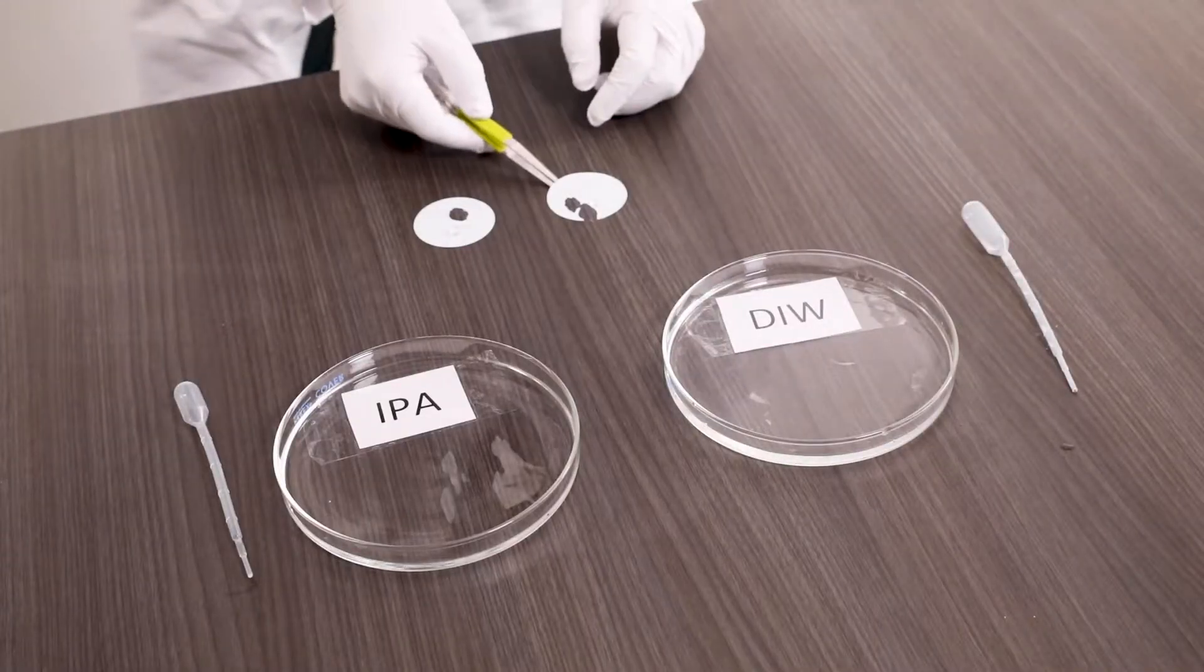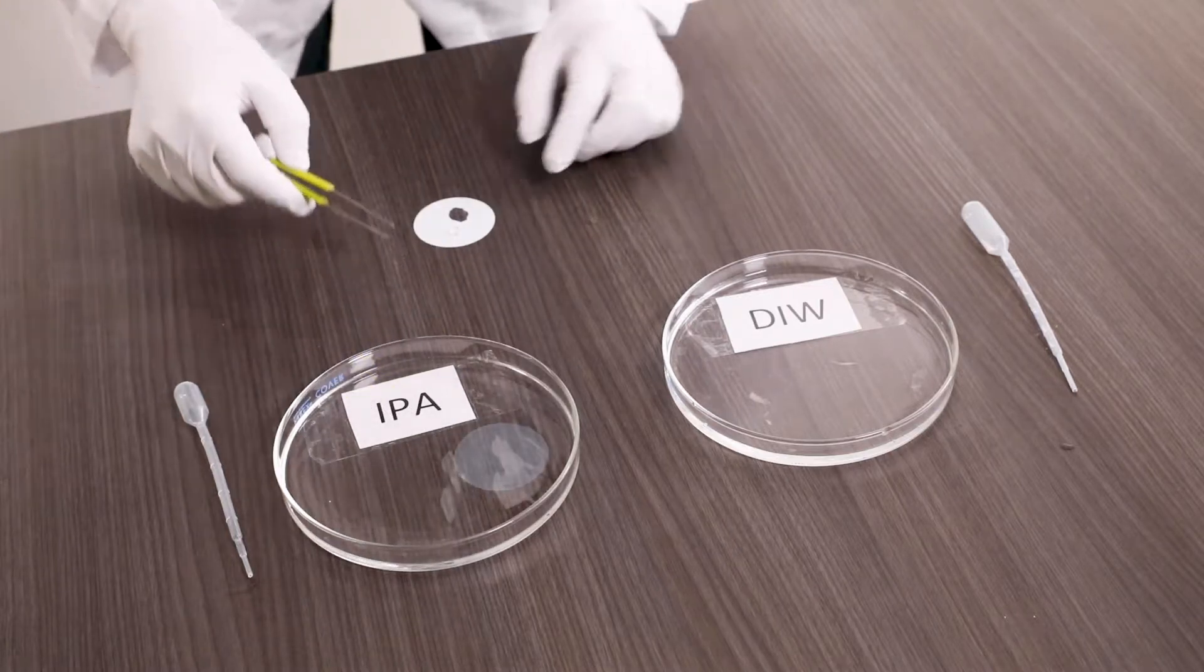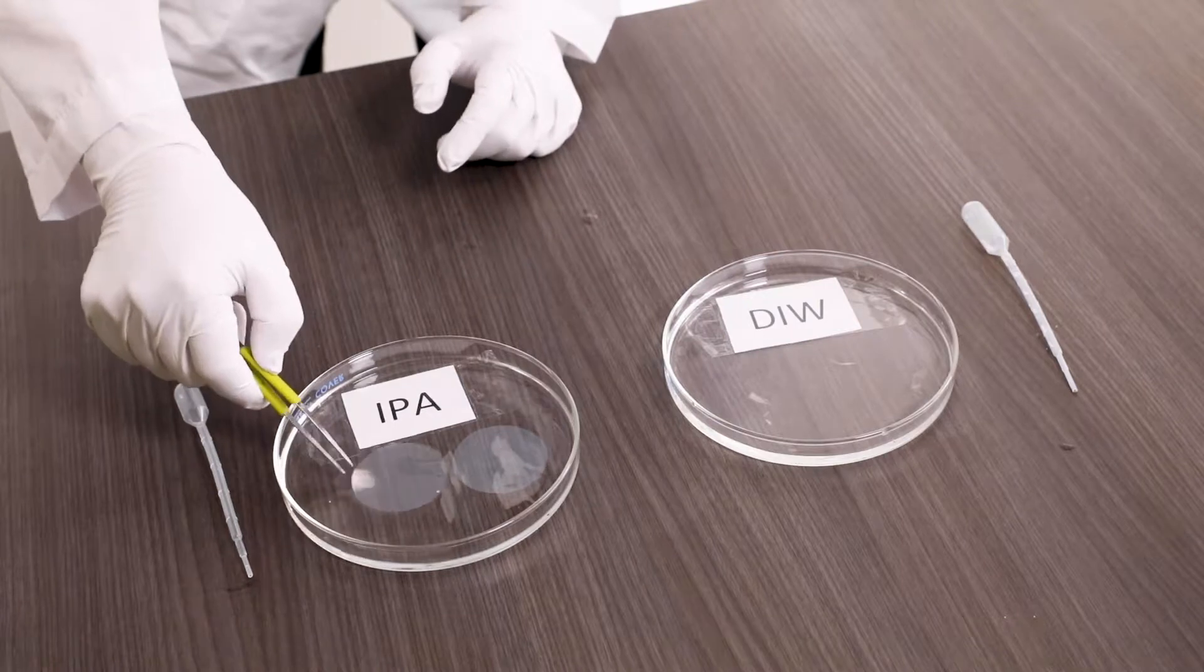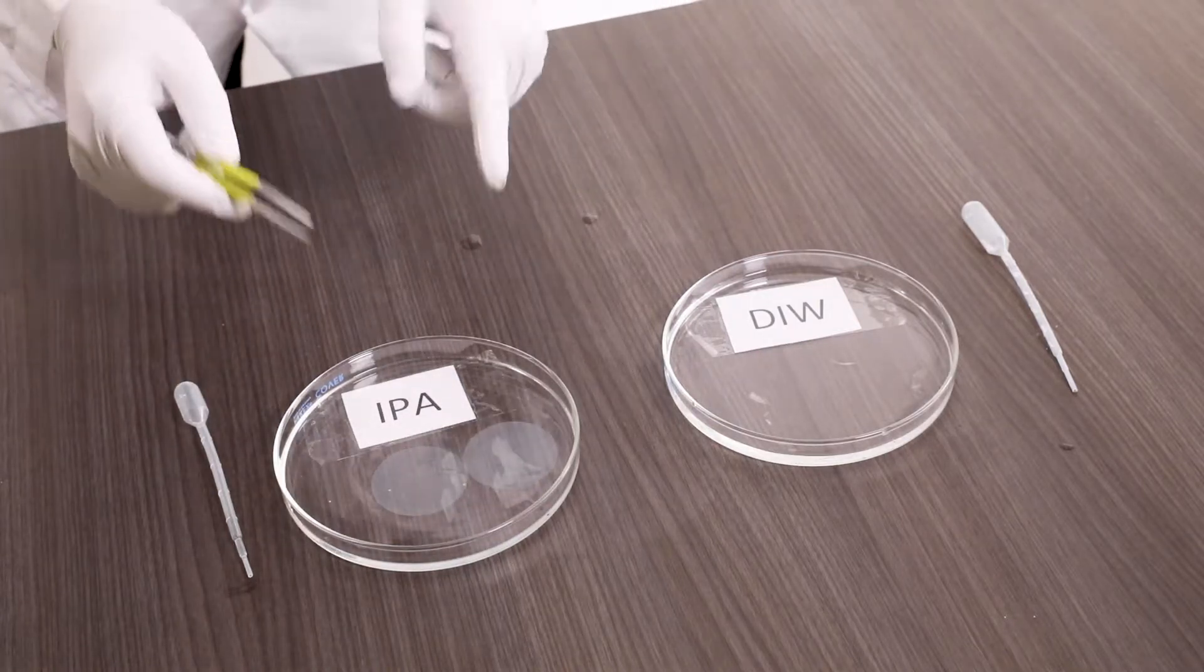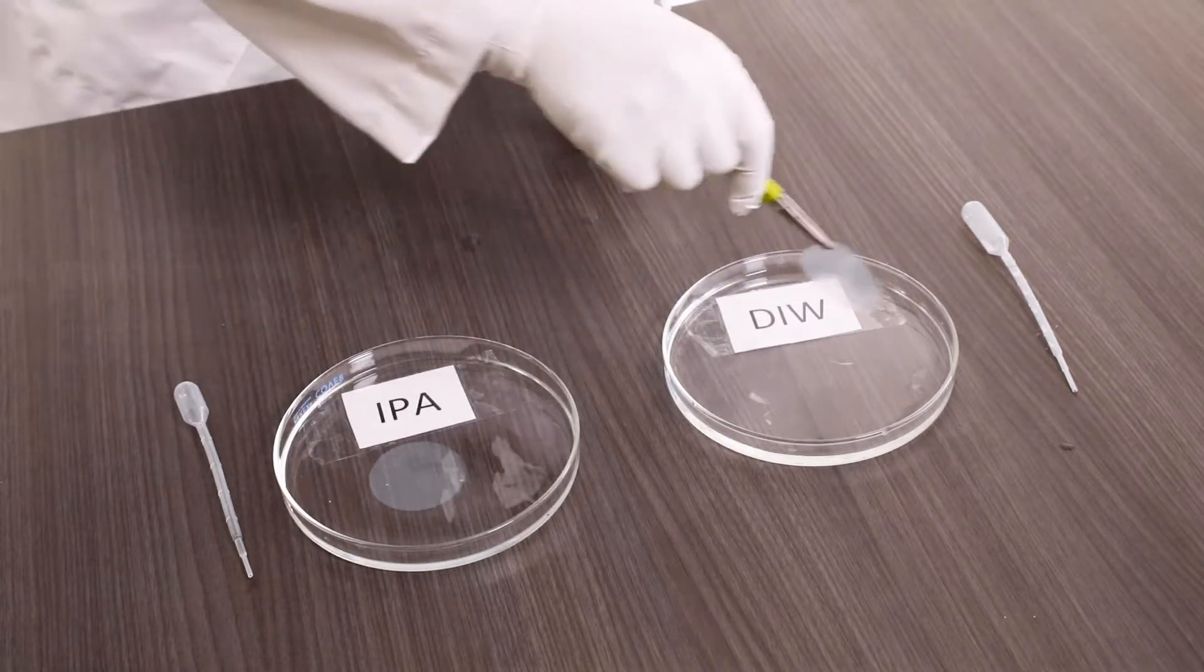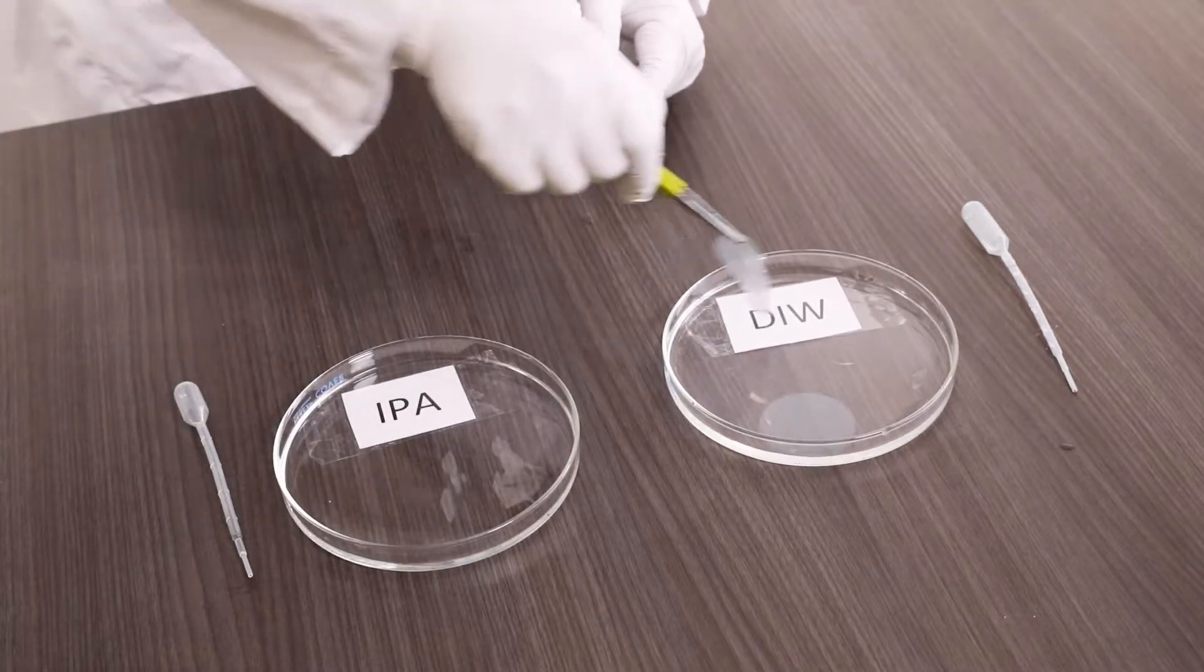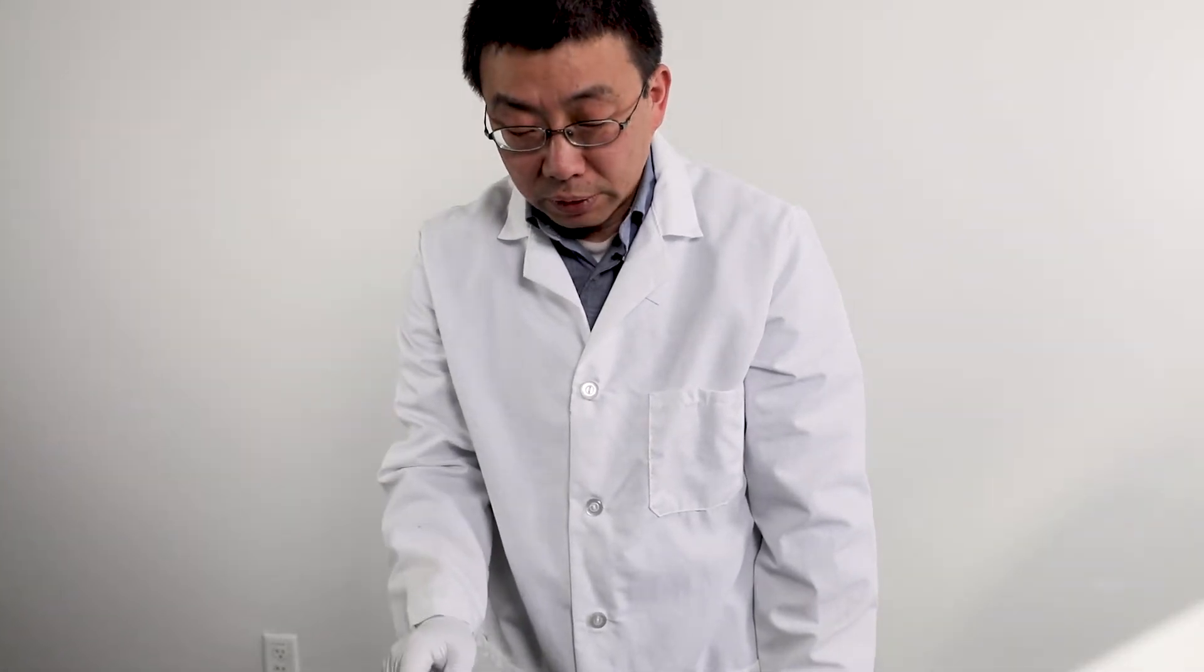Now I put two membranes into the IPA. You can see the membranes will be 100% wetted out in IPA, and then I transfer two membranes to DI water. So the membranes still stay wet because they were wet first in the IPA solution.